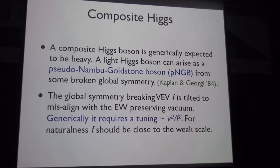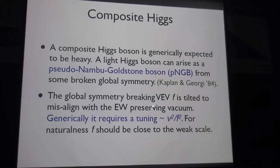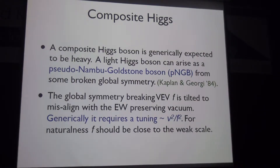The global symmetry is broken by the strong dynamics at some scale F, producing Nambu-Goldstone bosons identified with the Higgs field. We want F to not be completely aligned with the electroweak-preserving vacuum, but tilted slightly so that a small component V breaks electroweak symmetry. This generically requires tuning of order V²/F², so F should not be much larger than V. This is the naturalness requirement in composite Higgs models, analogous to the superpartner scale in SUSY.